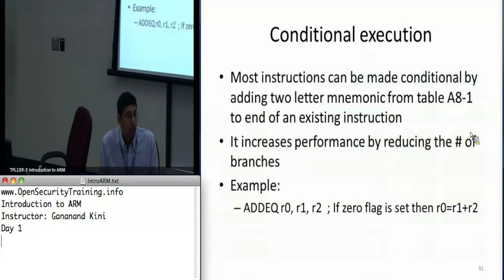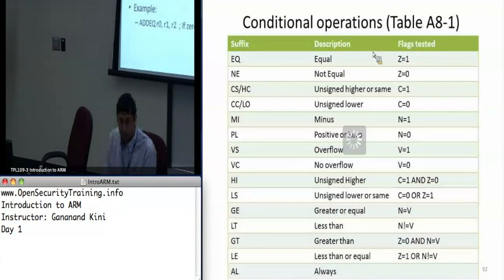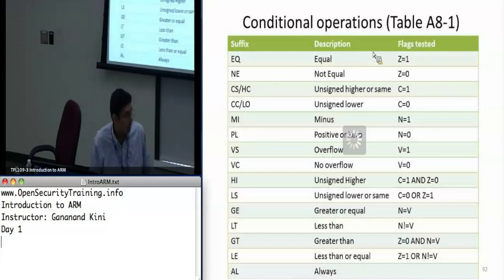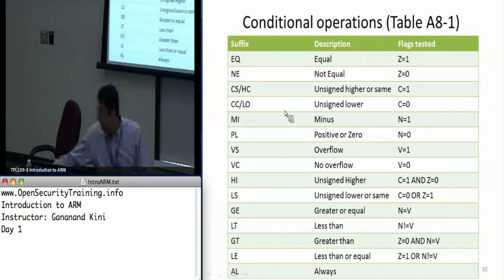Most instructions in the ARM instruction set can be made conditional. If you wanted to do a conditional add or subtract, you just use a suffix — you can look up the mnemonic from the table. This is a performance optimization because you can do branch prediction much better if you have conditions, which is why they have conditional suffixes.